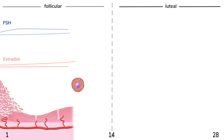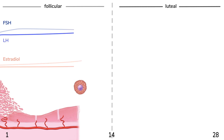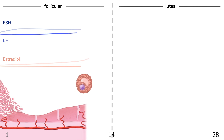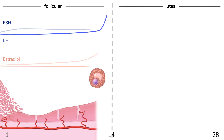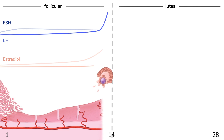All this time, another gonadotropin, LH, has slowly been rising as well. At around day 11–13 of the cycle, in part due to rising estradiol levels, an LH surge occurs, which triggers the dominant follicle's release of its egg — aka the main event: ovulation.